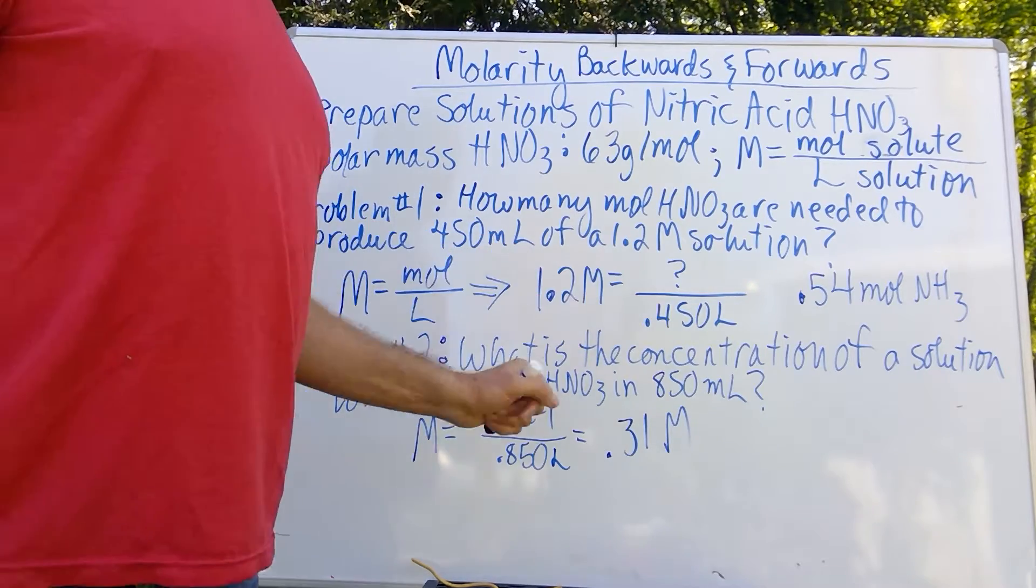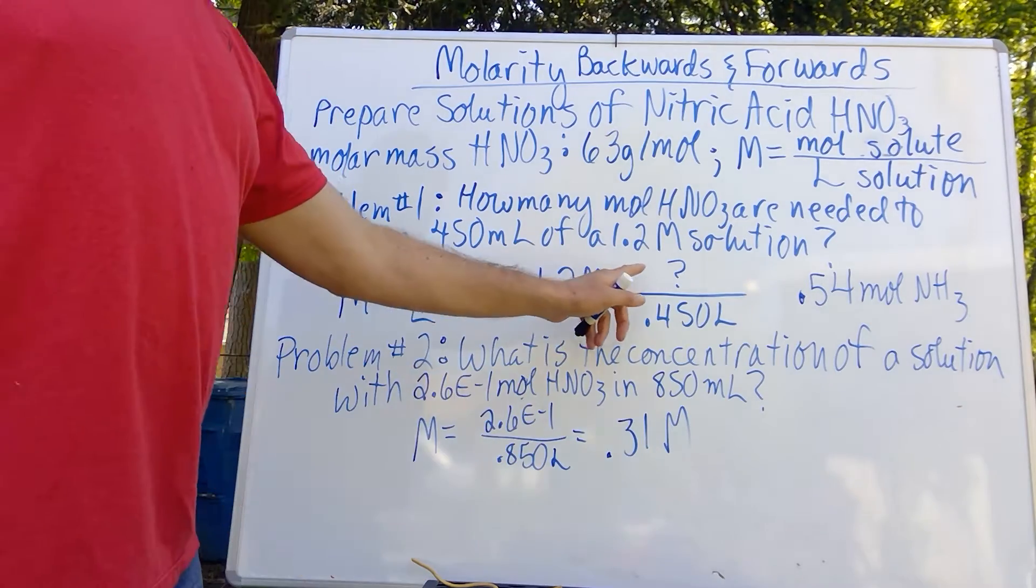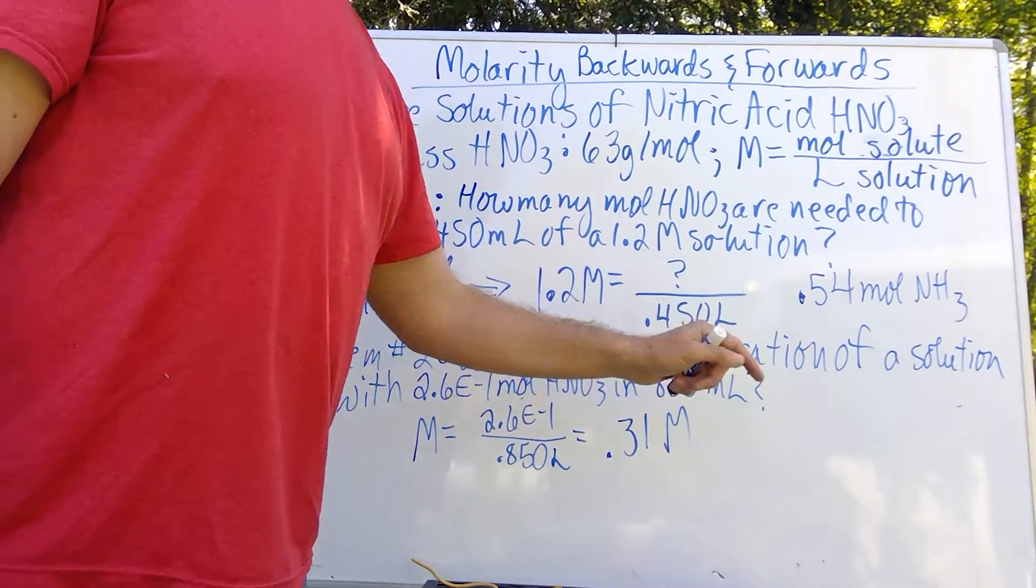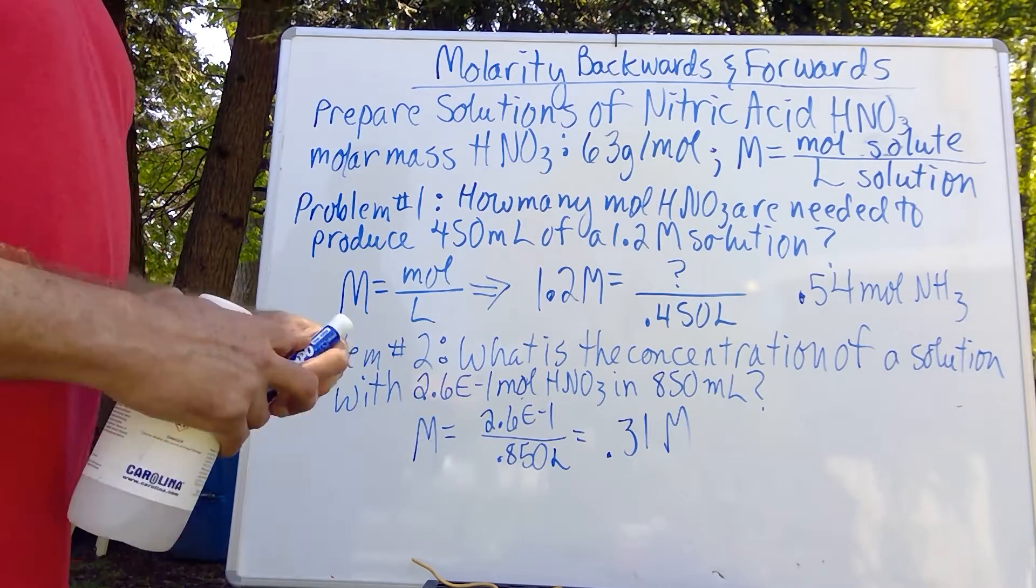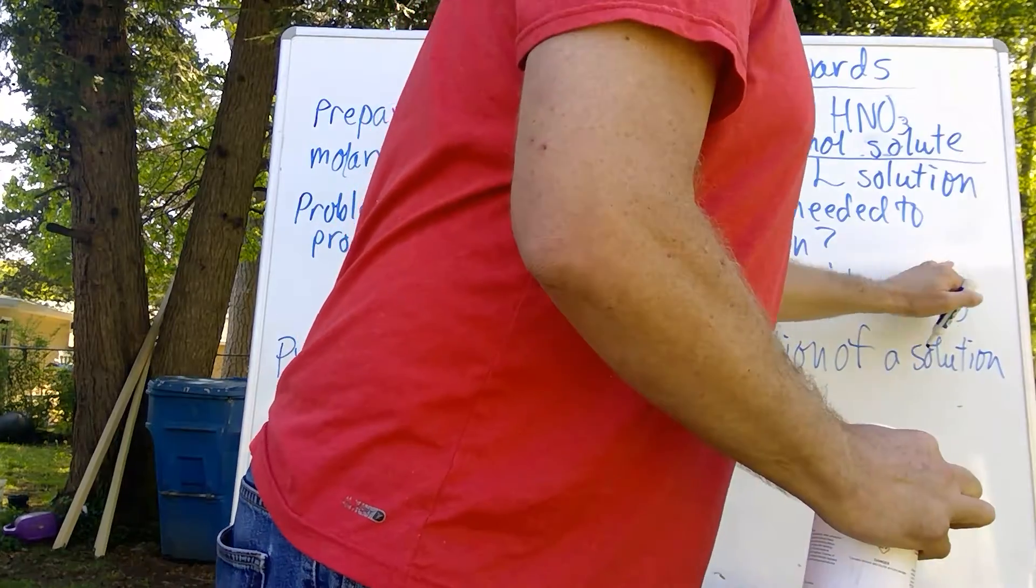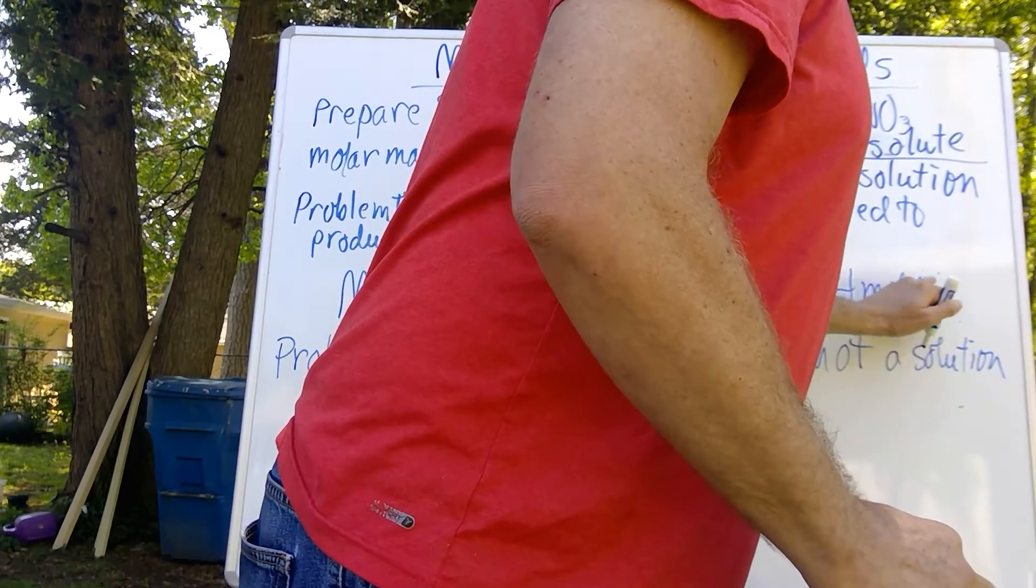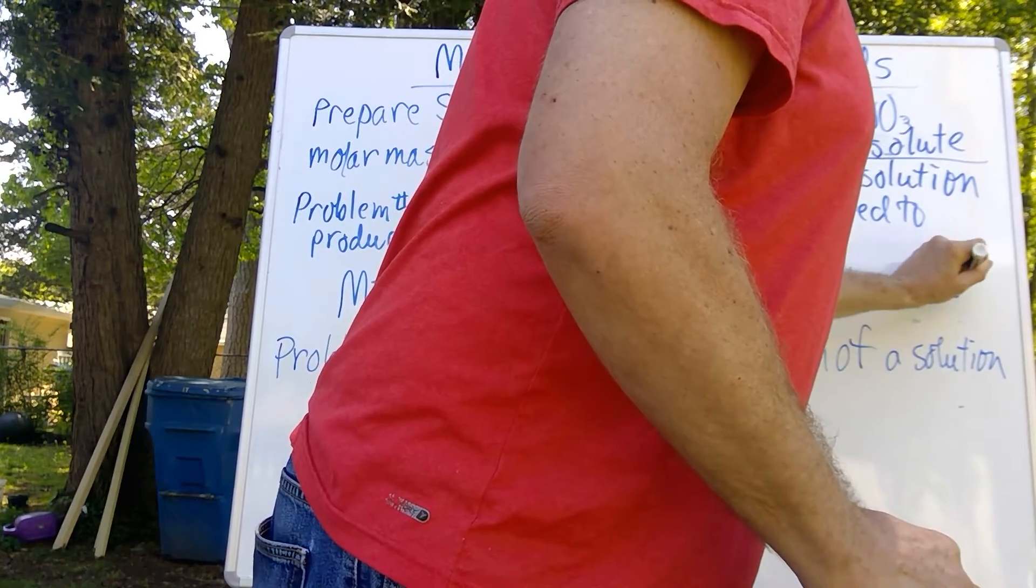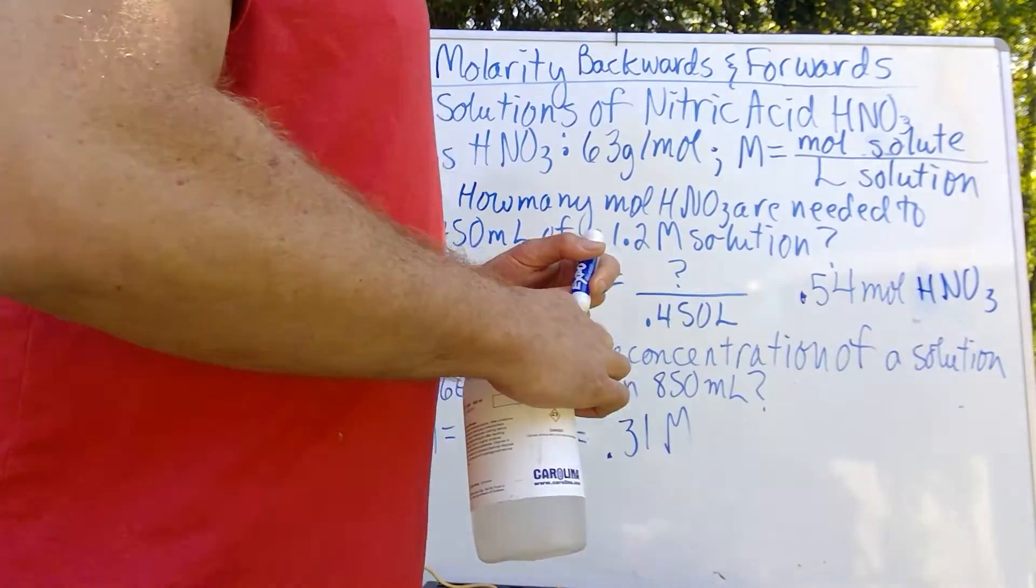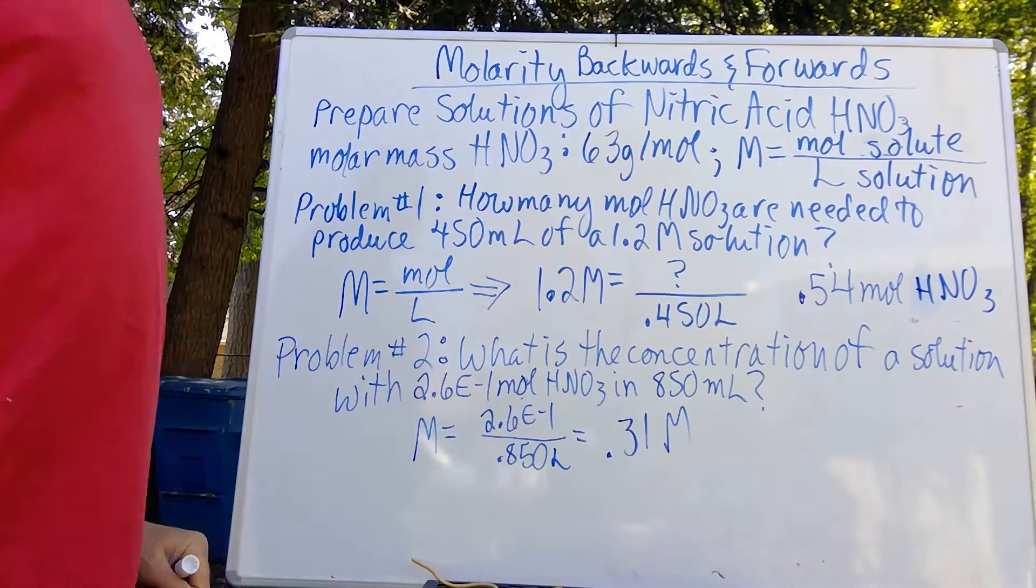So we just multiply these two values and we get our denominator on this fraction, which is the moles, and we have a little over half a mole, 0.54 moles of—sorry, that should be—that's ammonia—that should, and that's how much nitric acid we have.